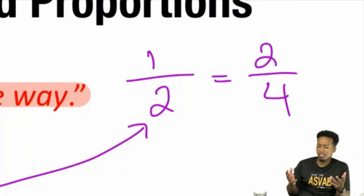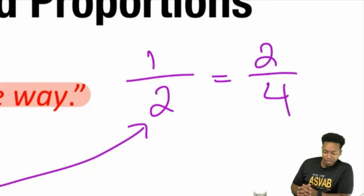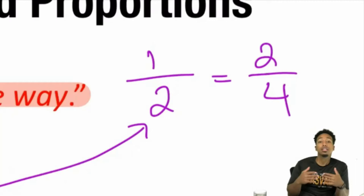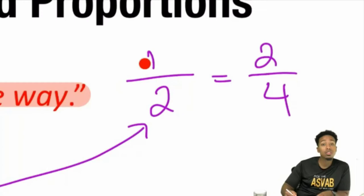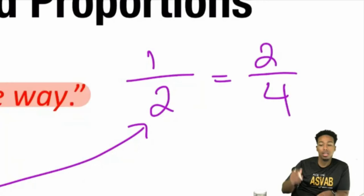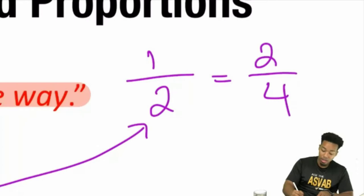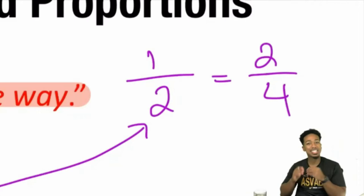One out of two, that's 50%, that's half. Now, is two half of four? Yes, two is half of four. Look at that — one is half of two, the top is half of the bottom. Same thing over here: two is half of four. The top is half of the bottom. Are we starting to see how we are comparing the same things in the same way, or saying we have the same parts of the same wholes?